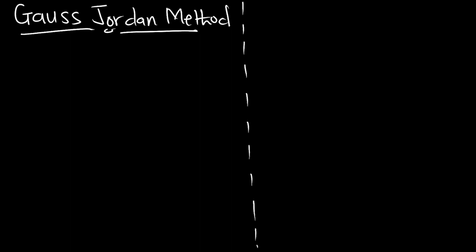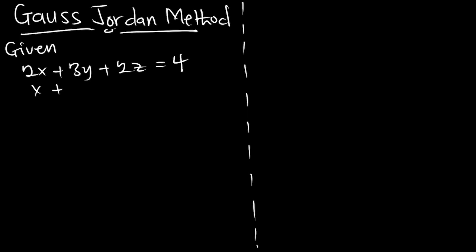Welcome to Einstein's Mechanics. In this episode, we are going to look at how to solve a system of equations using the Gauss-Jordan method. In the previous episode, we talked about the Gaussian elimination method. So let's assume we are given some system of equations: 2x + 3y + 2z = 4, equation 2: x + y - z = 2, and the third equation: 3x + 4y - 2z = 1.